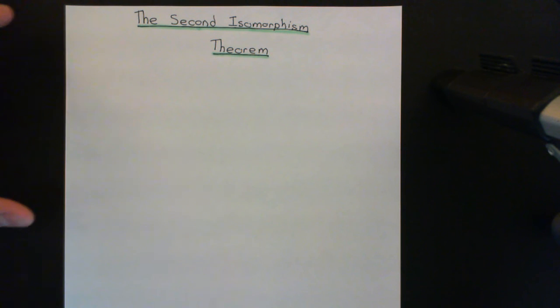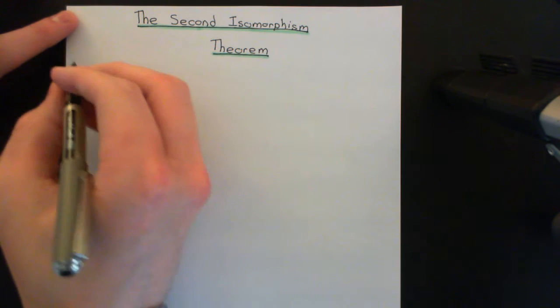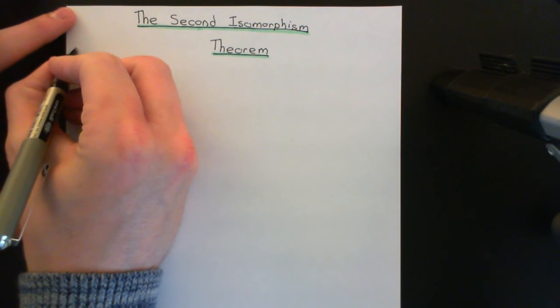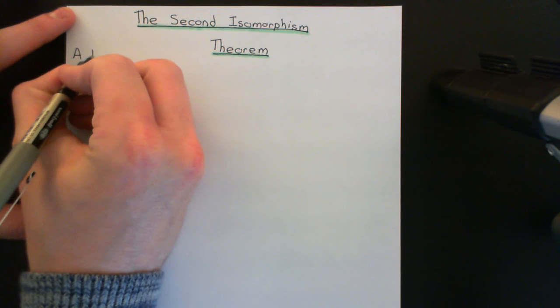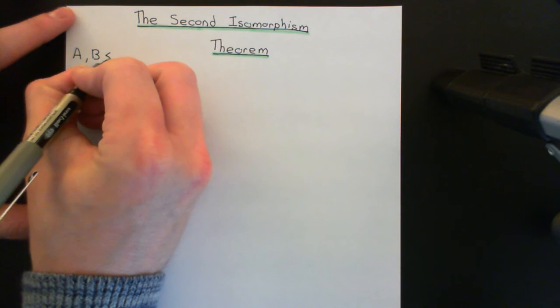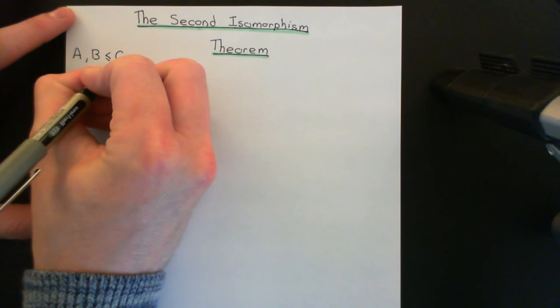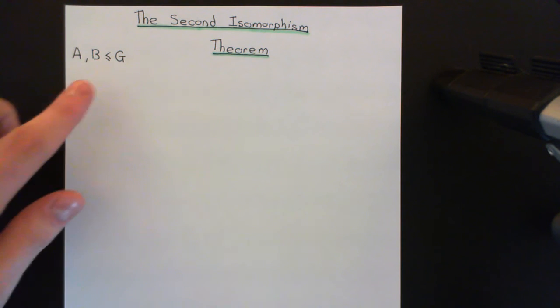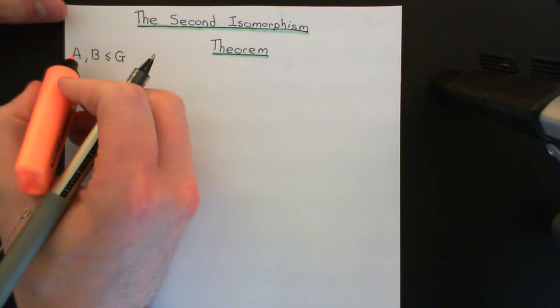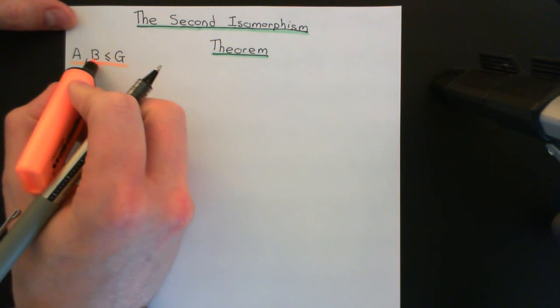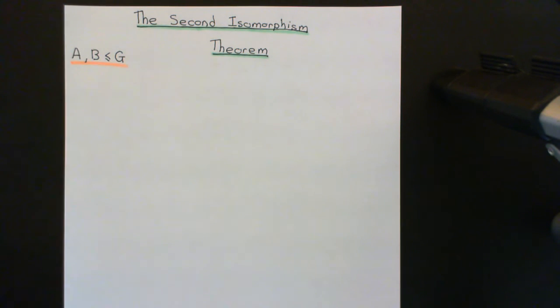Let me begin with the setup. We're going to have some group capital G, and we're going to have two subgroups of this group: A and B, which are both subgroups of capital G. For the second isomorphism theorem to work, we do not need our group nor our subgroups A and B to be finite at all. This will work in the infinite case as well. So this is just an arbitrary group with two subgroups A and B.